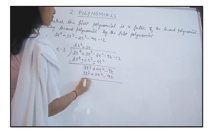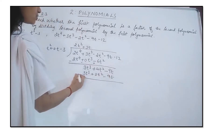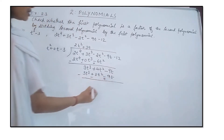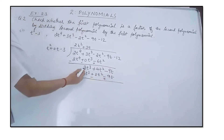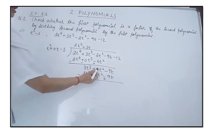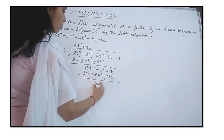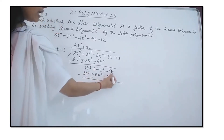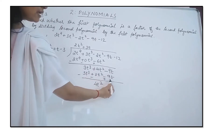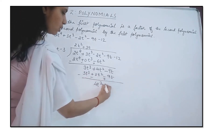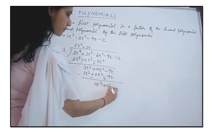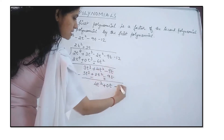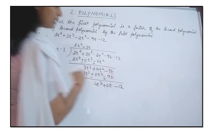Again we subtract. The signs change: this becomes positive, so 3t³ cancels to 0. Here 4t² − 0t² gives 0t², and −9t + 9t gives 0. The last term is then taken down.